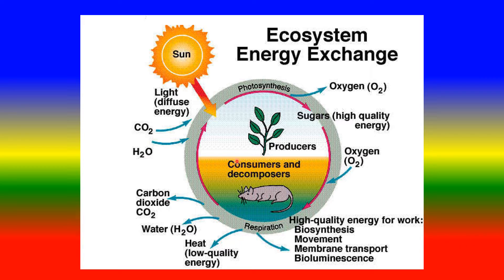Look at this picture: Energy Exchange in the Ecosystem. Sunlight provides diffuse energy, and through photosynthesis by plants, producers release oxygen. During photosynthesis, high quality energy in the form of sugars is produced.